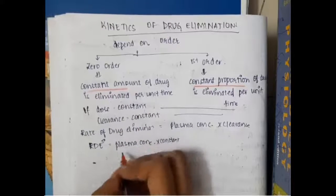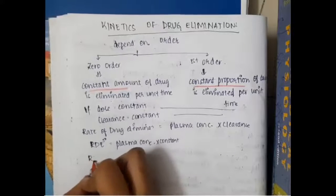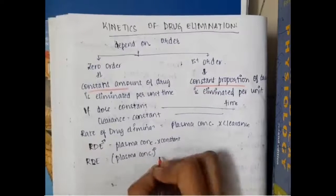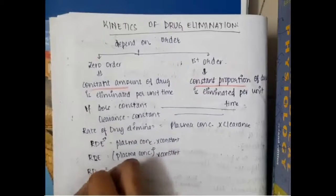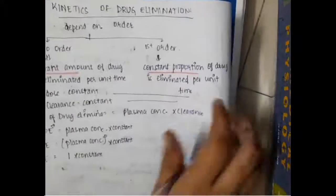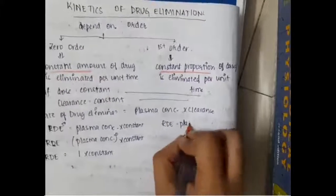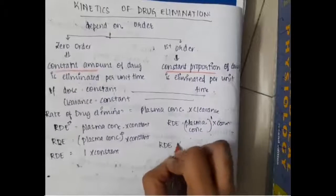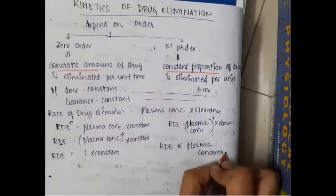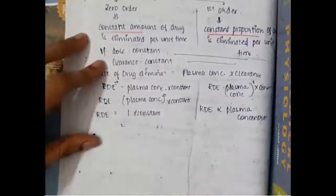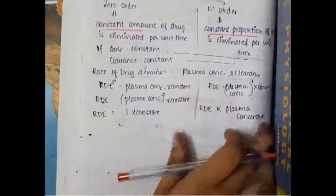For zero-order reaction, the rate of elimination equals plasma concentration to the power of zero multiplied by a constant. Since anything to the power of zero is 1, the rate of drug elimination is constant. For first-order reaction, rate of drug elimination equals plasma concentration to the power of 1 multiplied by constant, so elimination is directly proportional to plasma concentration.